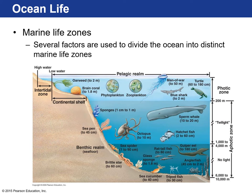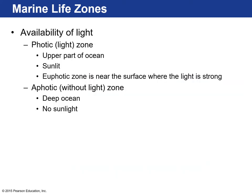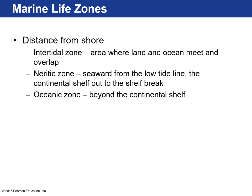Here are the different marine life zones. In the pelagic area, the sunlit layers are called the photic zone. Beyond 200 meters down to a kilometer is the twilight region where a little diffuse light gets in but not enough for photosynthesis. Beyond that where there's no light is the aphotic zone — the deep ocean where no sunlight penetrates past about a kilometer.